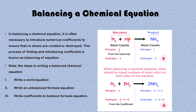Now let's look at hydrogen. On the reactant side we have 2 atoms of hydrogen, and on the product side we have 3 atoms of hydrogen. The lowest common multiple of 2 and 3 is 6. So if you multiply 3 by 2 it gives 6, and if you multiply 2 by 3 it also gives 6. By adding the coefficient 3 on the reactant side, we have a total of 6 hydrogen atoms there; and the coefficient 2 on the product side multiplied by 3 also gives 6 hydrogen atoms. So we have 6 hydrogen atoms on both sides — this equation is balanced.